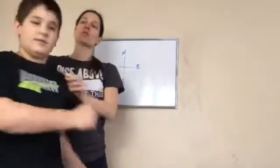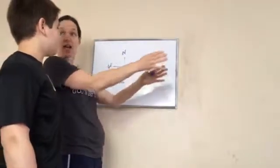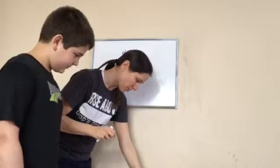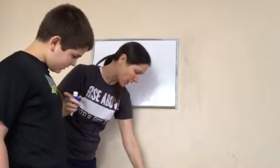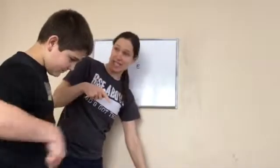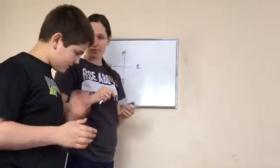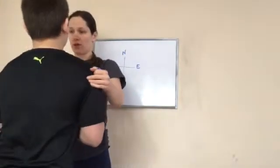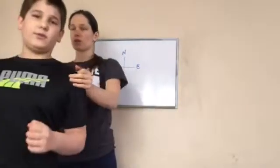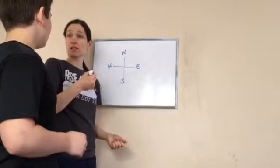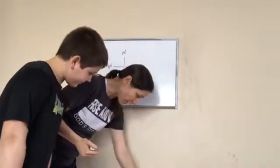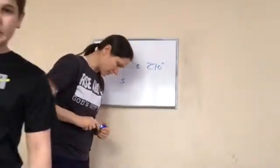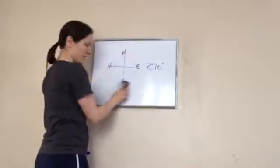Barney turned counterclockwise in order to face east as well. So from north going counterclockwise — 90, 180, 270 — and three times 90 is 270. So how many degrees did Barney turn? 270. Very good — 270 degrees to face east.